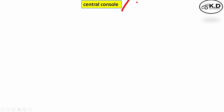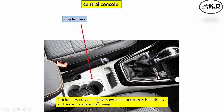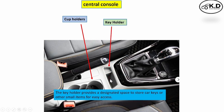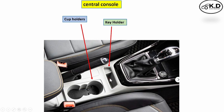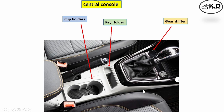The next component is the central console, also called the floor console. The first part is the cup holder, whose function is to hold the cup securely while traveling. The next part is the key holder, which provides space to hold the key. The next part is the gear shifter, which allows the driver to shift and change gear manually.